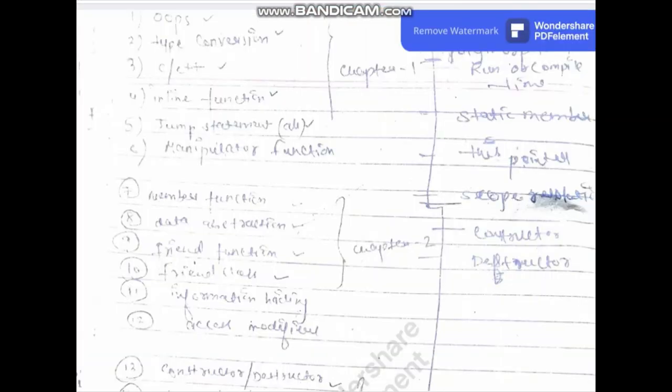The first topic is OOPs. What is OOPs? OOPs is object-oriented programming — that is the standard form, so don't confuse OOPs with object-oriented programming. The second is types of conversion. The third is C or C++ — what is the difference between C and C++. The fourth is inline function, and the fifth is the jump statement.